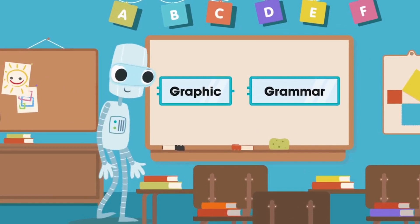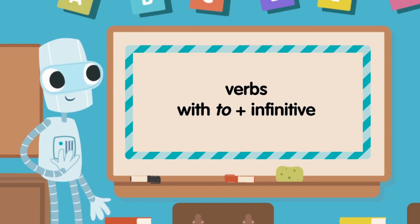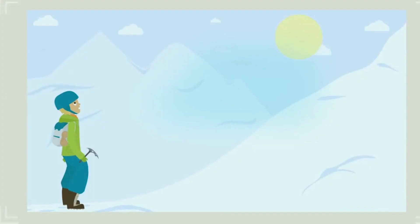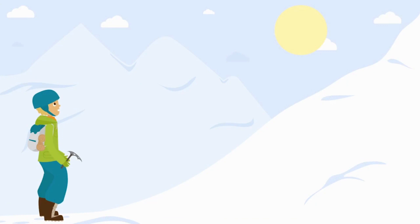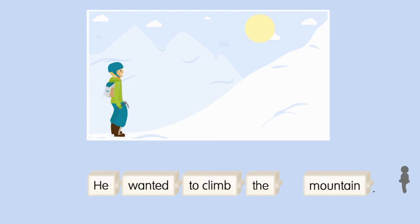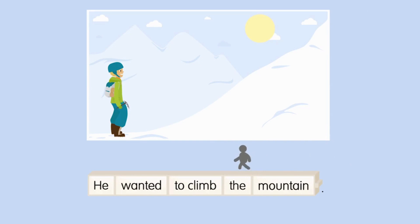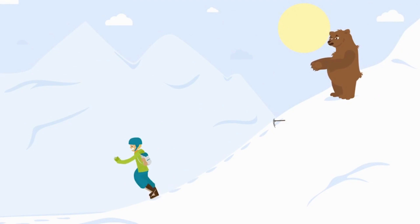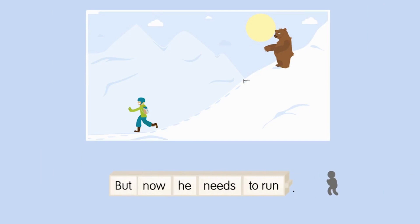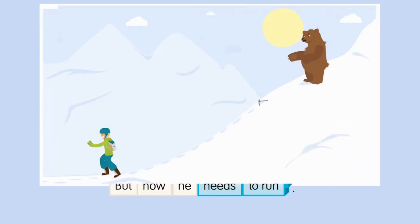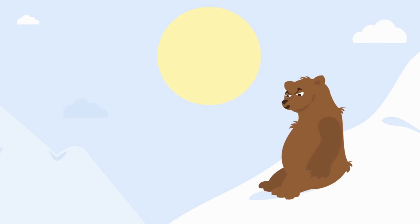Verbs with infinitive. He wanted to climb the mountain, but now he needs to run. He wanted to climb the mountain, but now he needs to run.